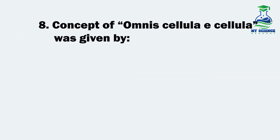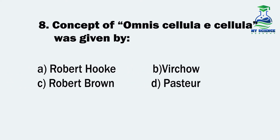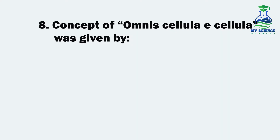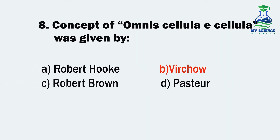Question 8. The concept of omnis cellula e cellula was given by: A. Robert Hooke, B. Virchow, C. Robert Brown, or D. Pasteur. And the correct option is B. Virchow.